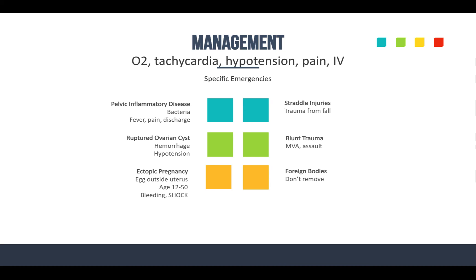PID — pelvic inflammatory disease — is caused by bacteria. Signs and symptoms include fever, lower abdominal pain, maybe a discharge and abdominal guarding. This can lead to more serious conditions like sepsis and even infertility. A ruptured ovarian cyst is common in a lot of patients — follicles get stimulated by hormones, enlarge, become cysts, and then rupture. If there's associated bleeding, you can get significant hemorrhage and the patient can be hypotensive. Expect pain with that as well.